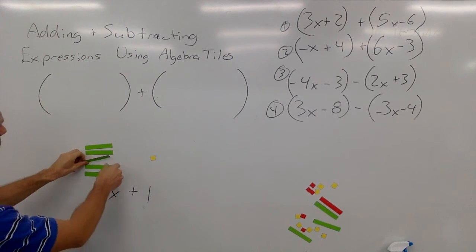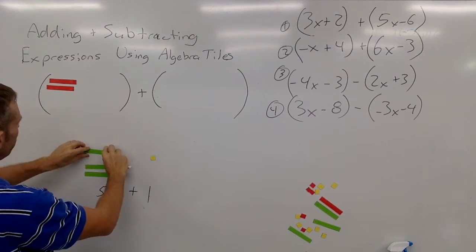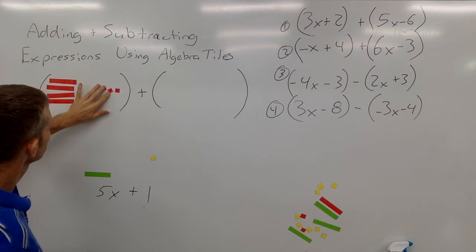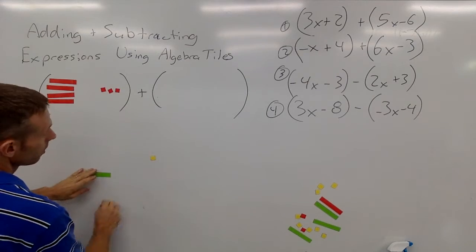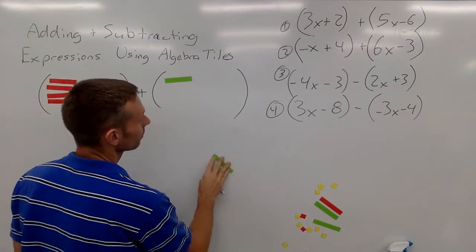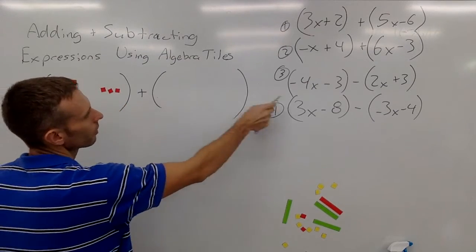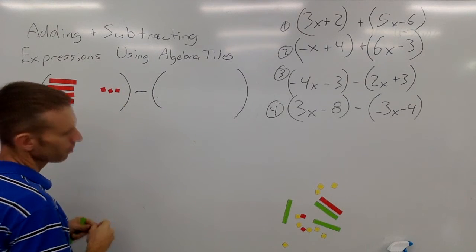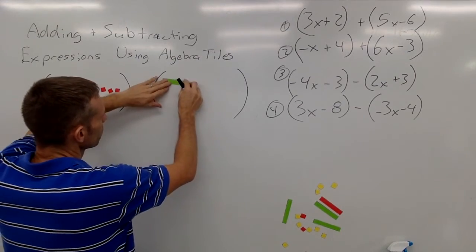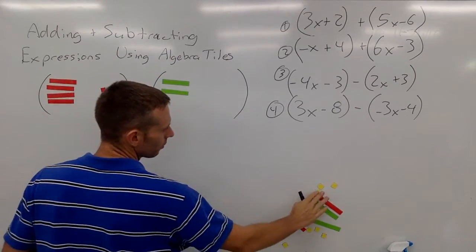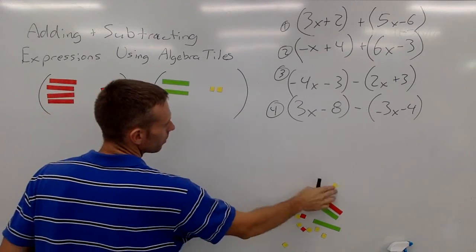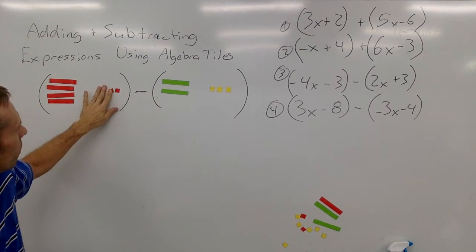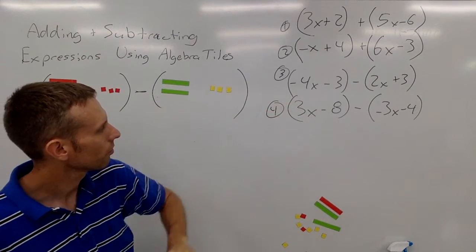Okay, now let's try a subtraction problem. Negative 4x minus 3, and positive... oh sorry, I'm doing this one here. Negative 4x minus 3, minus positive 2x plus 3. Okay, negative 4x minus 3, or plus negative 3, minus positive 2x plus 3.